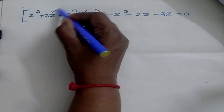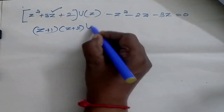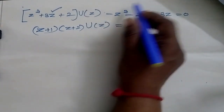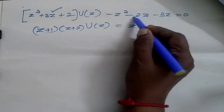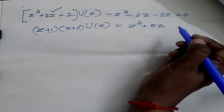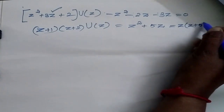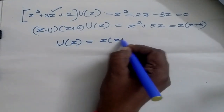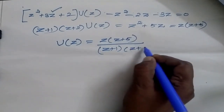So now I am going to factorize this. I will have (z+1)(z+2) into U(z) is equal to. This z squared I can bring to this side, which will become plus z squared. Minus 2z minus 3z is minus 5z. When I bring this it will become plus 5z. So now this can be written as z into (z+5). So now my U(z) is equal to z(z+5) divided by (z+1)(z+2).